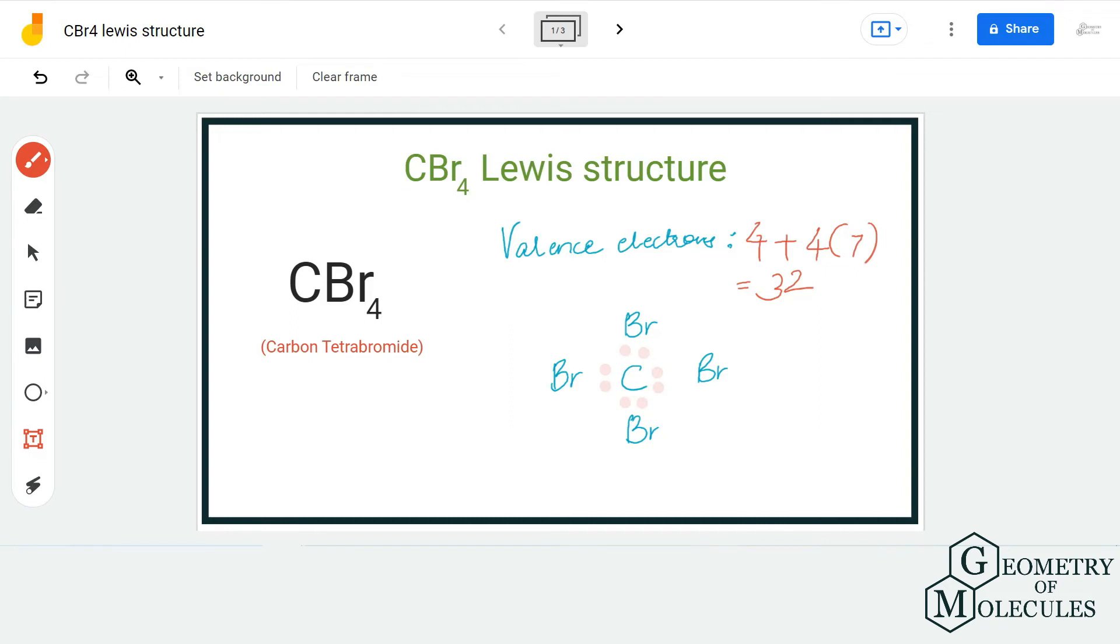As you can see, carbon already has a complete octet as it has eight valence electrons in its outer shell. We are going to place the remaining electrons around the bromine atoms. I am going to place six valence electrons around each bromine atom, and doing that we will be using up all 24 valence electrons.